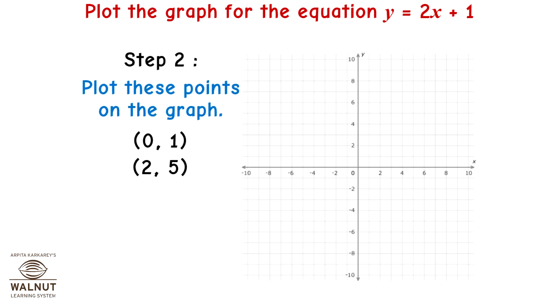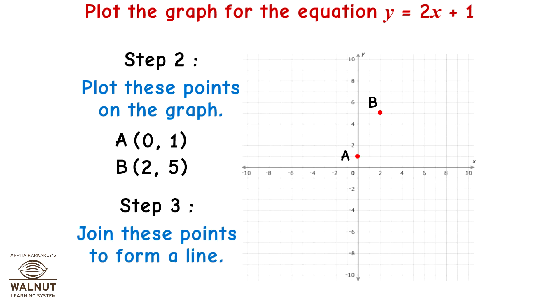Step 2: Plot these points on the graph — Point A (0, 1) and Point B (2, 5). Join these points to form a line.